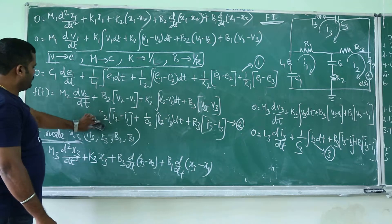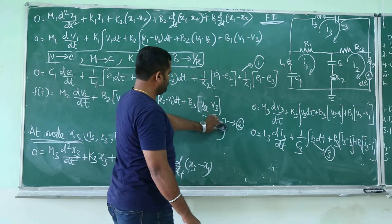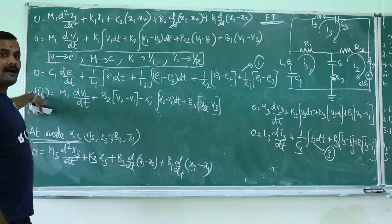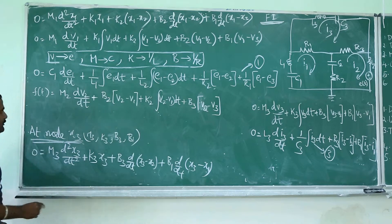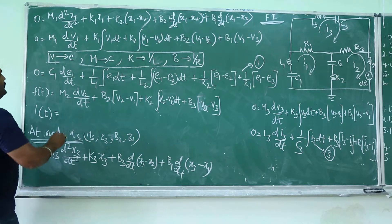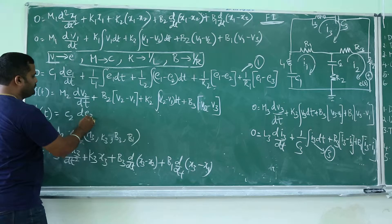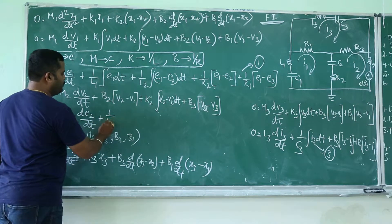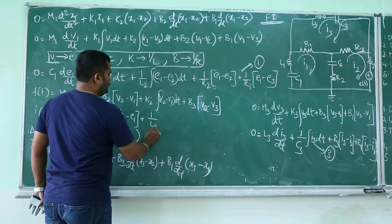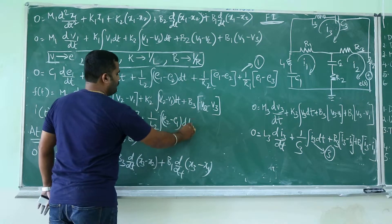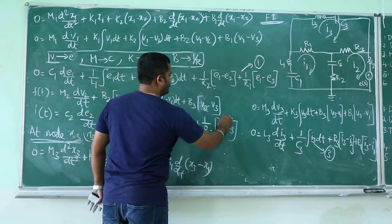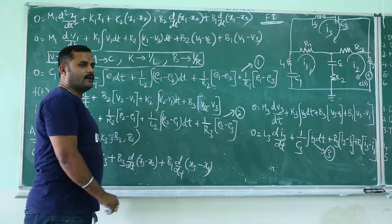Coming to the next equation for the second mechanical equation. Force will be equal to current, because we are summing current through the components, so the summation of individual currents equals the total current. Therefore F(t) equals I(t) equals C2 into dE2 by dt plus 1 by R2 into (E2 minus E1) plus 1 by L2 integration of (E2 minus E1) dt plus 1 by R3 into (E2 minus E3). This is your second equation for the force-current analogous network.